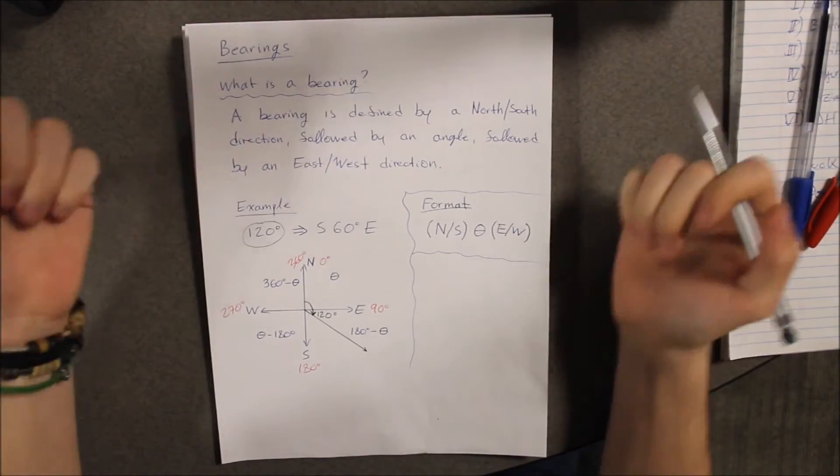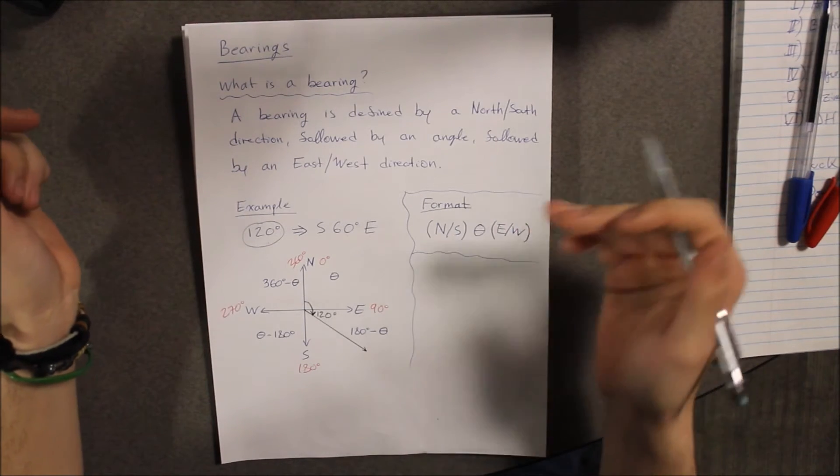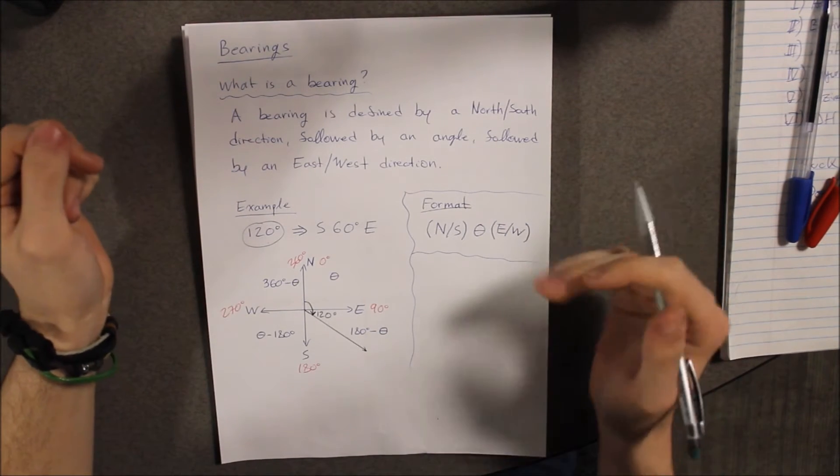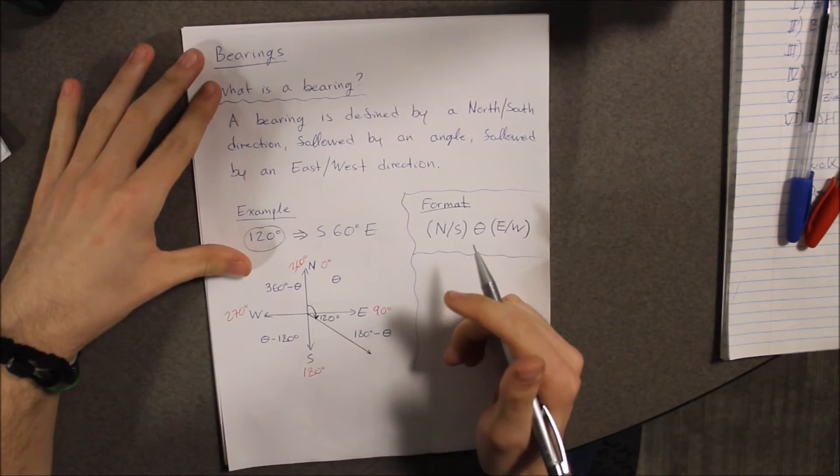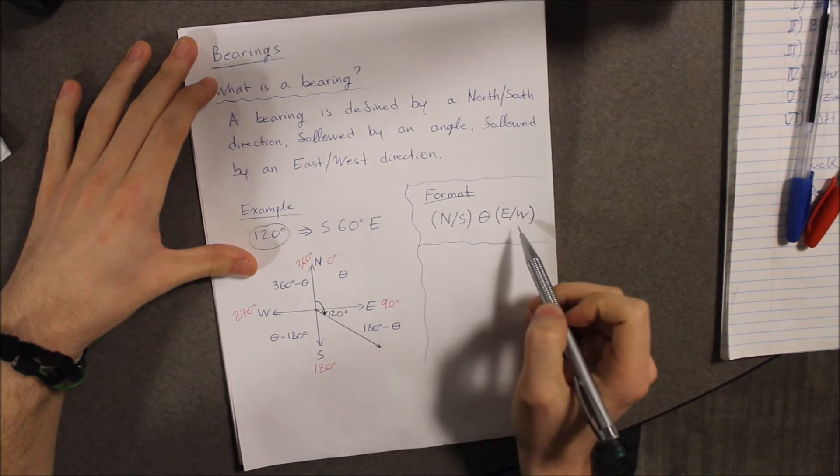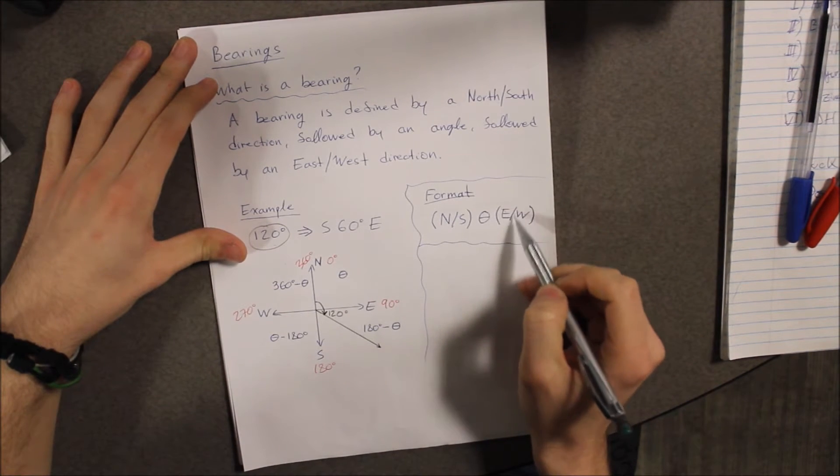So on the note of bearings, what is a bearing? A bearing is defined by a north or south direction, followed by an angle, yet again followed by an east or west direction. The general format that a bearing follows is: north or south, angle, east or west.